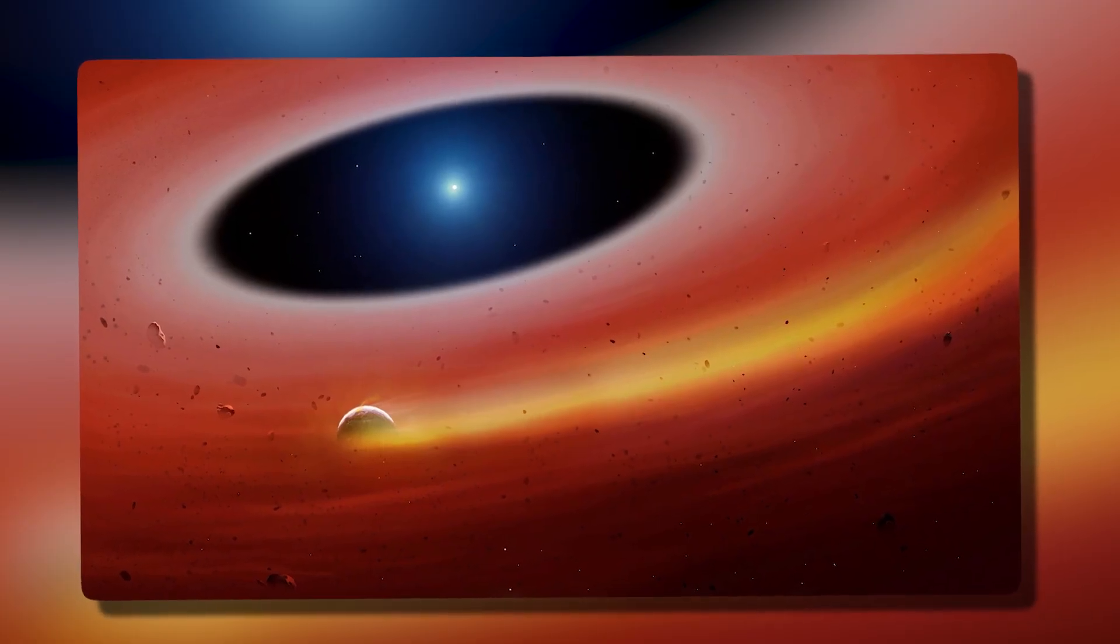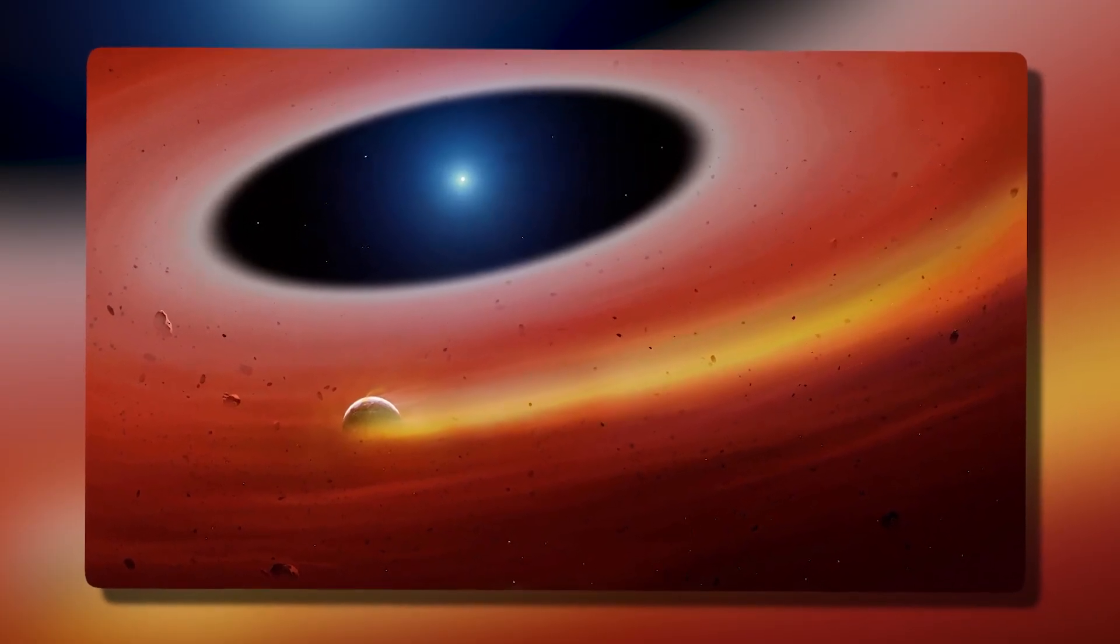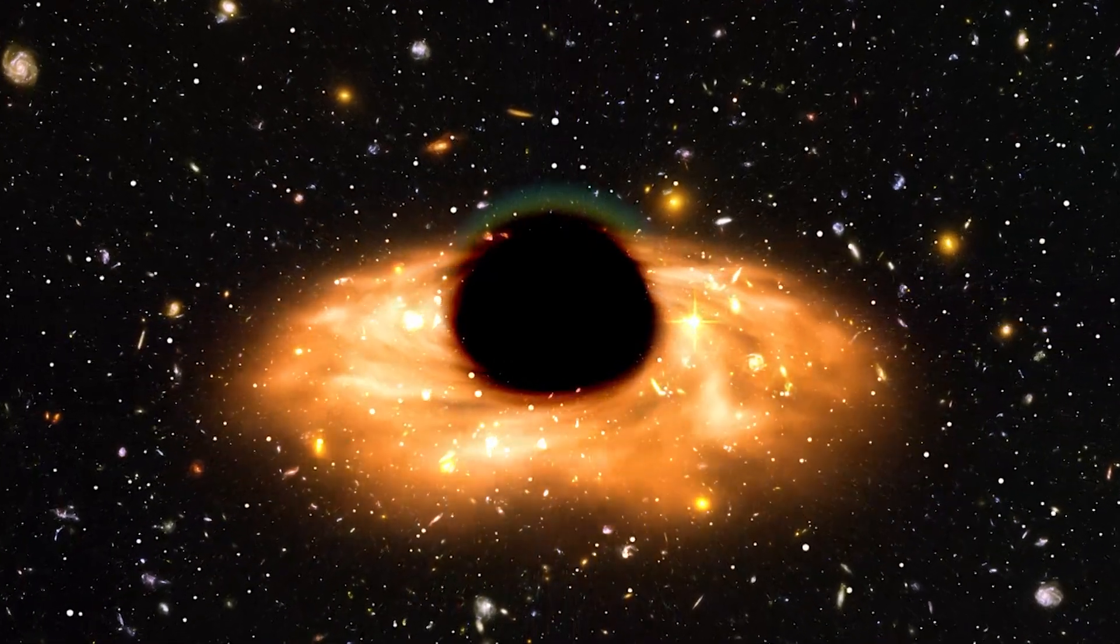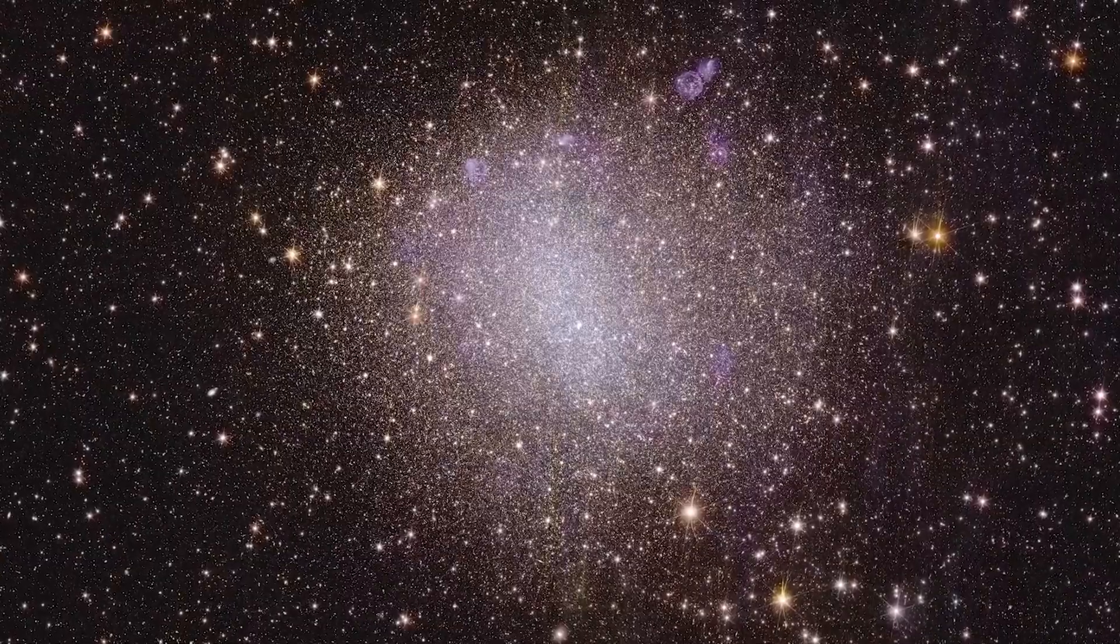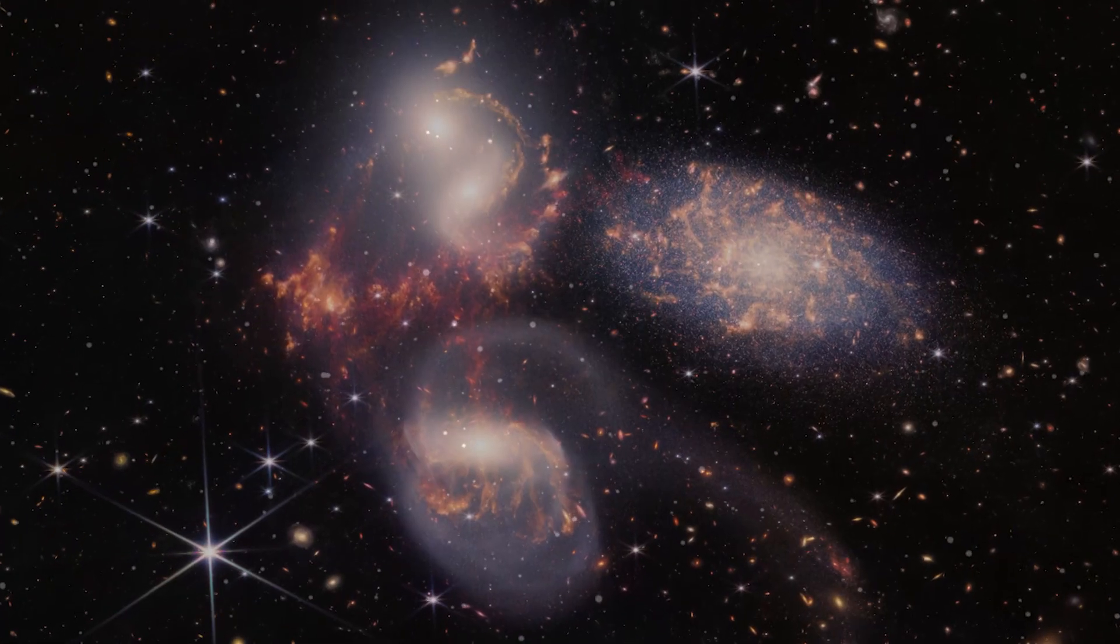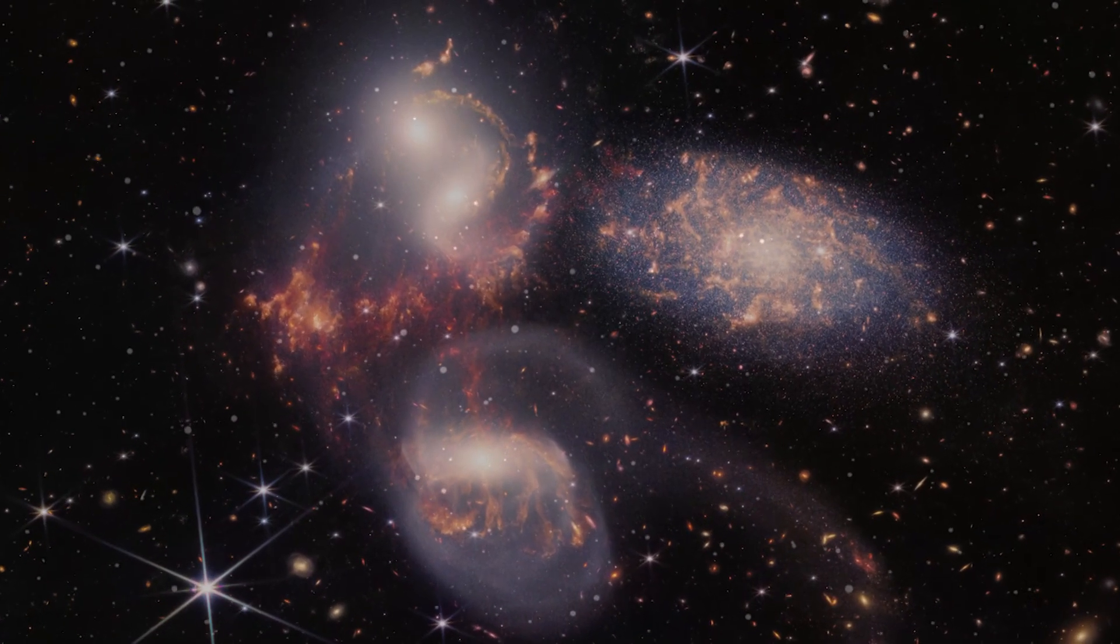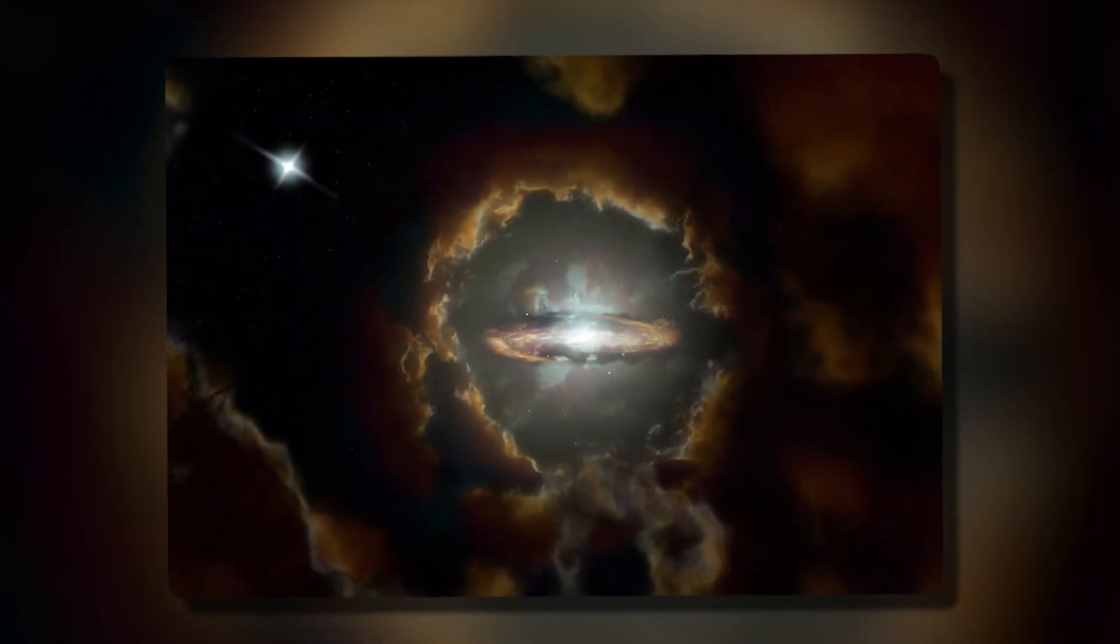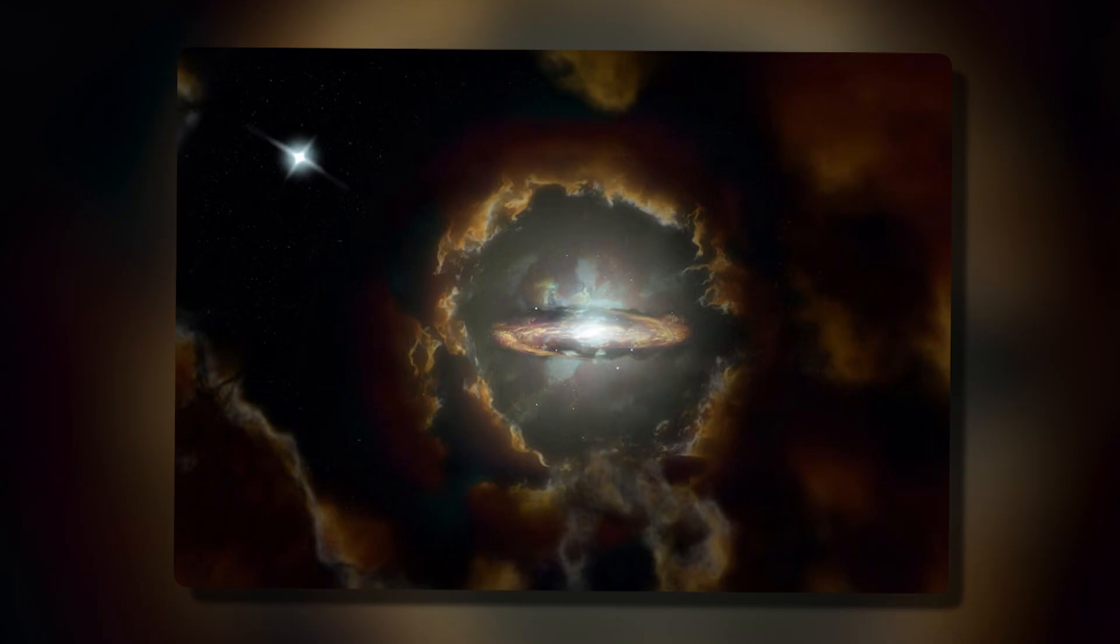Instead of the inefficient friction-limited accretion seen in modern disks, early black holes may have consumed matter through dense filamentary inflows from the cosmic web. These filaments, stretching across intergalactic space, could have funneled enormous quantities of primordial gas directly into galactic centers without the bottlenecks and angular momentum barriers we observe in the present epoch.